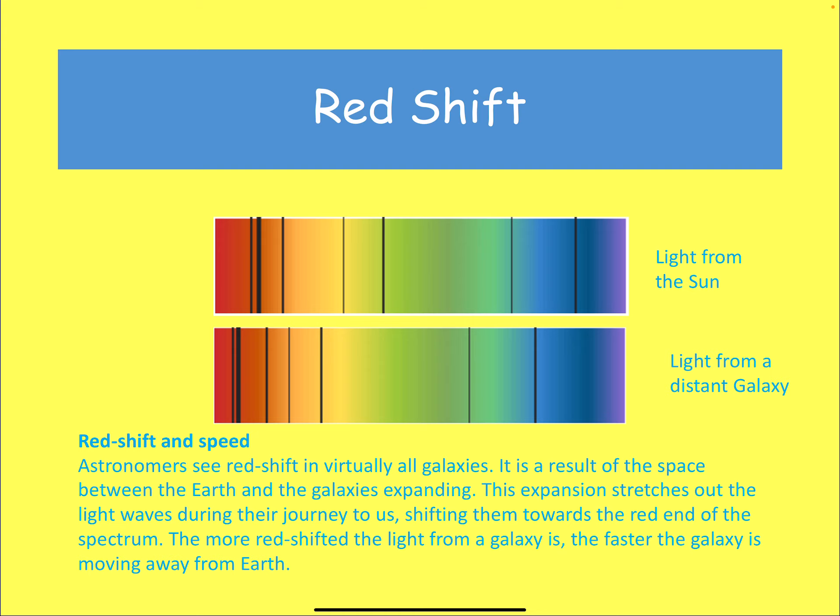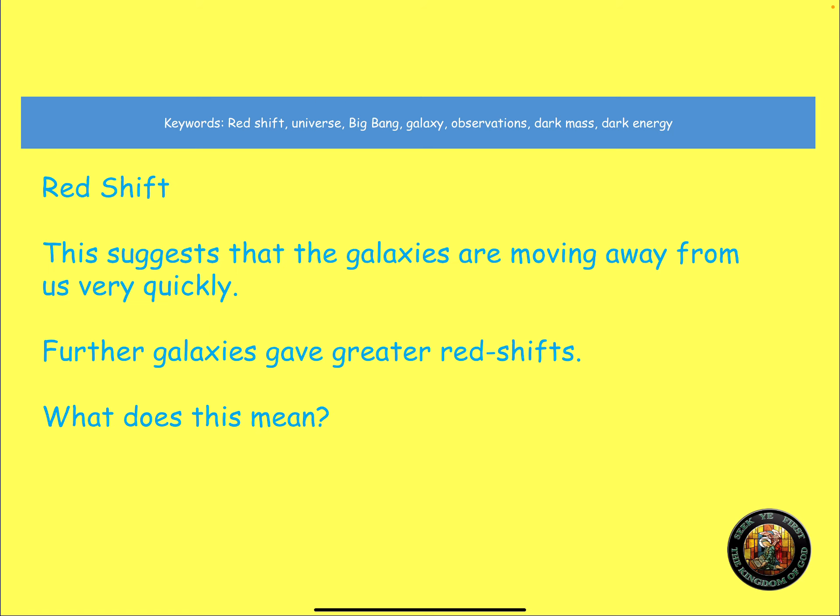Meaning the wavelength is increasing. So astronomers see red shift in virtually all galaxies. It's a result of space between the earth and the galaxy expanding. It's getting bigger. The expansion stretches out the light waves during their journey to us, shifting them towards the red end of the spectrum. The more red shifted the light from a galaxy is, the faster the galaxy is moving away from us. So that's the first piece of evidence that supports the Big Bang Theory. Red shift suggests that the galaxies are moving away from us very quickly. And the further galaxies have greater red shift. What does this mean? Okay, well, I hope you've said this means that the universe is expanding. If the galaxies are moving away from us, and the further the galaxy, the faster it's moving away, the universe is expanding.